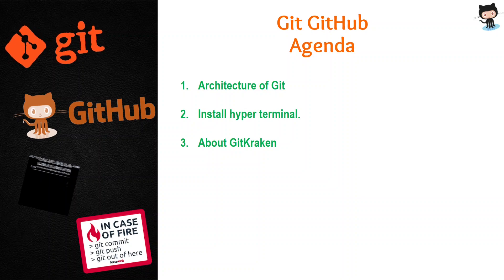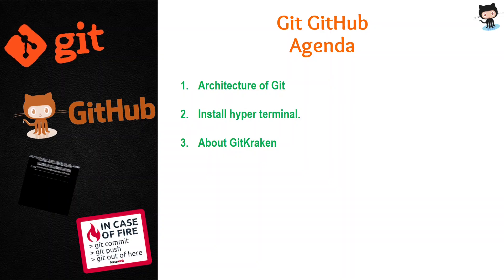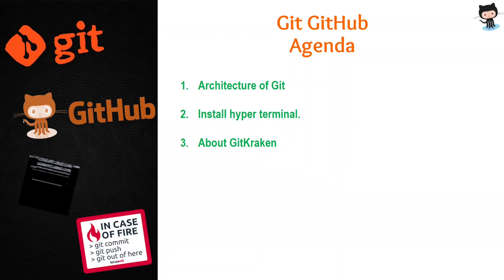Since we are done with the architecture of Git, let's install the hyper-terminal. You must be thinking: what is hyper-terminal? When we code for Python we use a Python IDE; for Java we use Eclipse or IntelliJ. Similarly, for terminals we have CMD, Git Bash, and also hyper-terminal. The hyper-terminal is mostly used by many developers nowadays because it comes with a lot of customization.